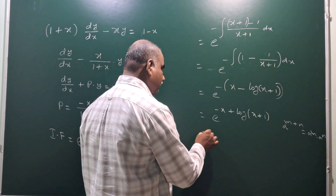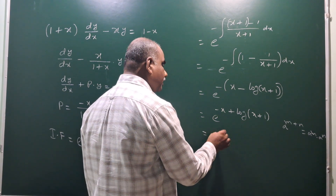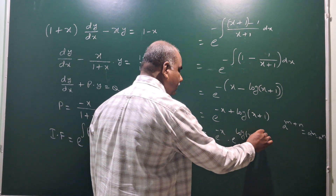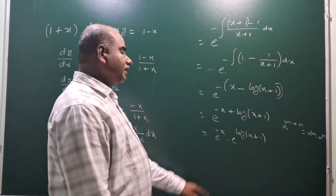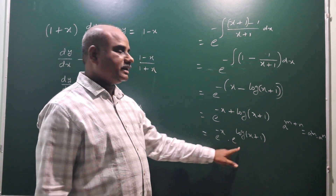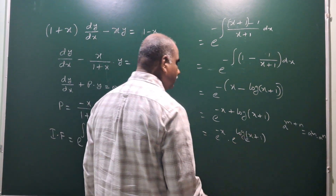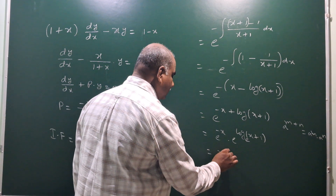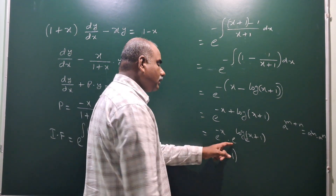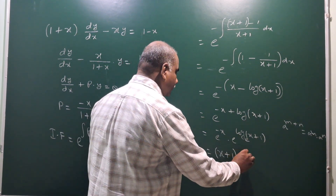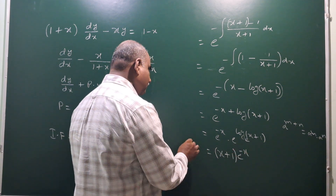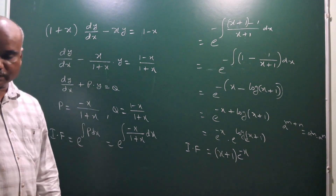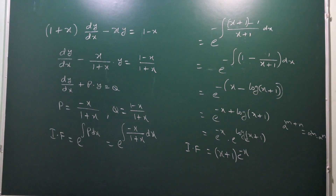Applying the law of exponents — a to the power of m plus n equals a to the power m into a to the power n — we get e to the power minus x into e to the power log(x plus 1). Since e to the power log cancels the log, this becomes (x plus 1) into e to the power minus x. This is our integrating factor.